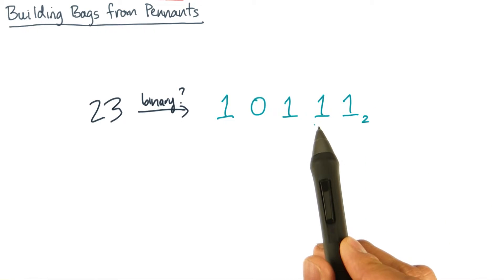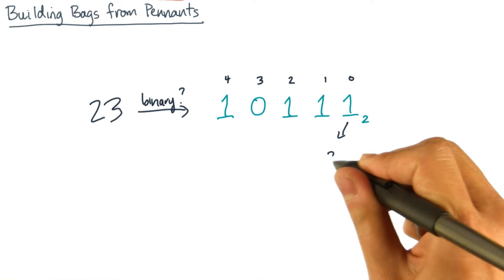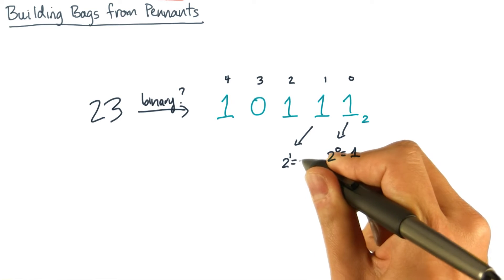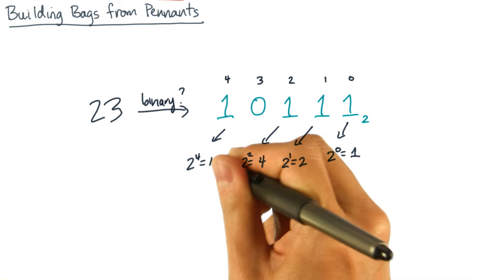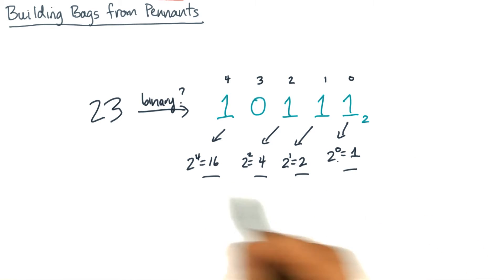Now each bit position represents a distinct power of 2. So let's number the bit positions. This bit is 2 to the 0, which is equal to 1. The second bit is 2 to the 1, or 2. And we can go on and on. And notice that 16 plus 4 plus 2 plus 1 is 23.